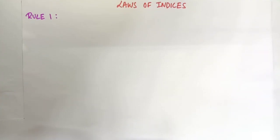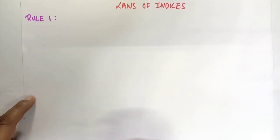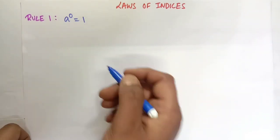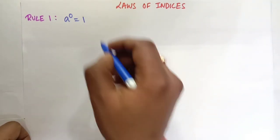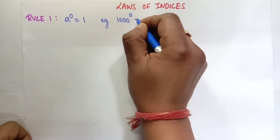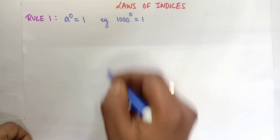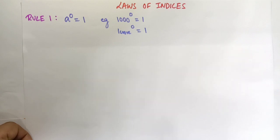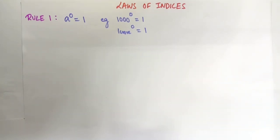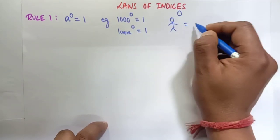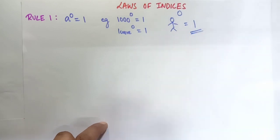Rule number 1: a to power 0 equals 1. Anything raised to the power 0 is 1. For example, 1000 to the power 0 is 1, and 2 to the power 0 is also 1. So any number raised to the power 0 equals 1.